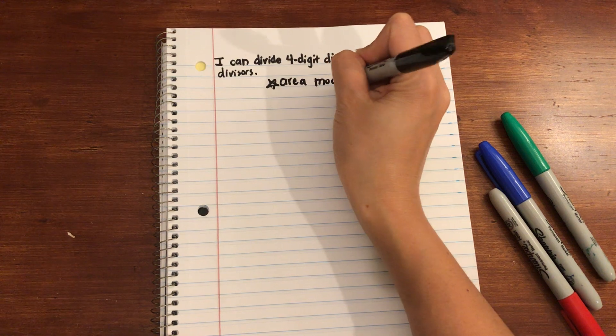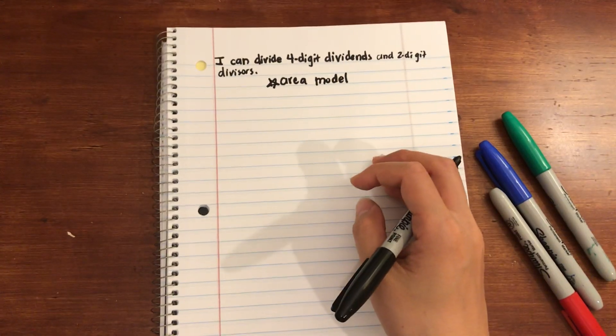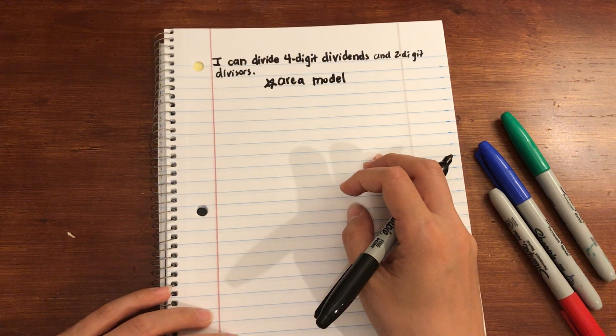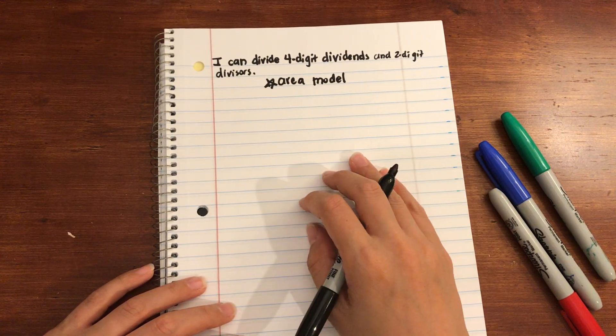What's really great about using an area model is it's a visual to understand division by creating that relationship between multiplication and division as inverse operations.